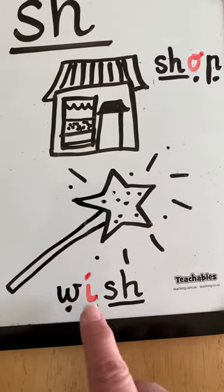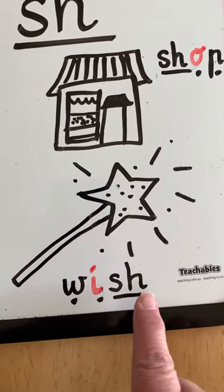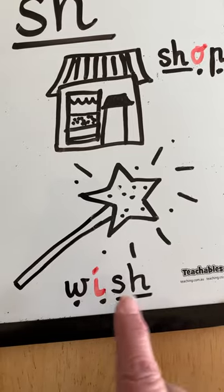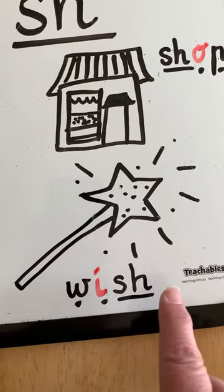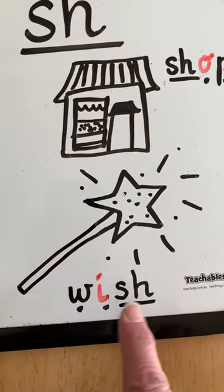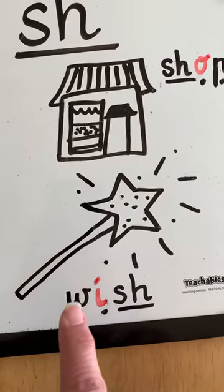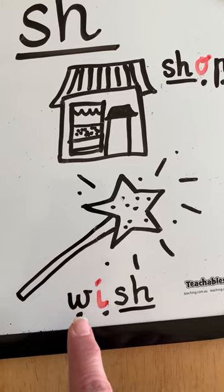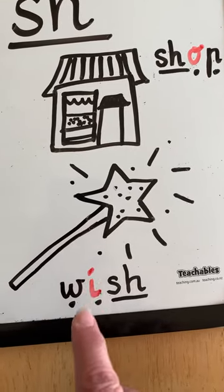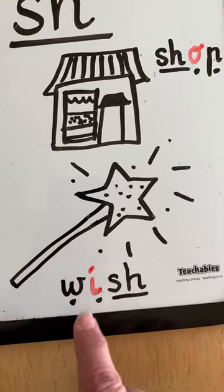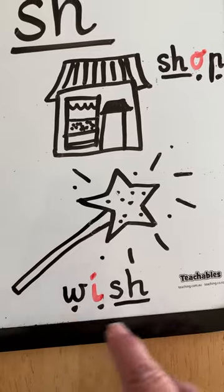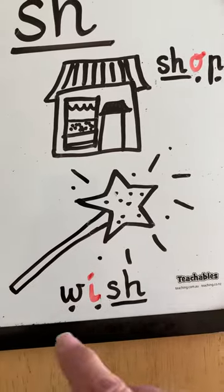Can you see how I have the line there? It helps us remember that those two letters are read together as one sound. This letter and this letter have a dot to show that they are one sound each: W, I, SH — WISH.